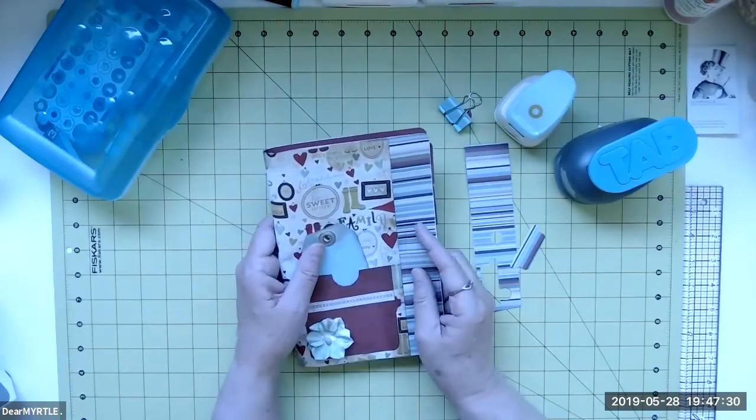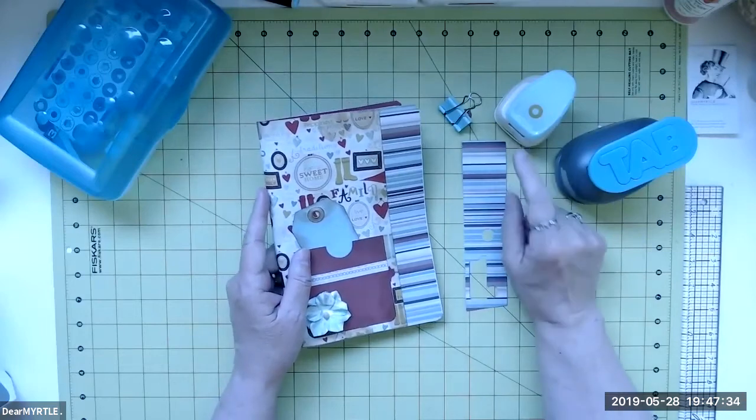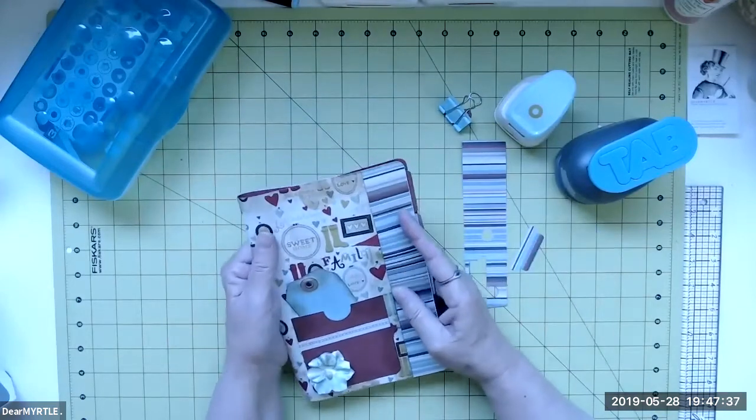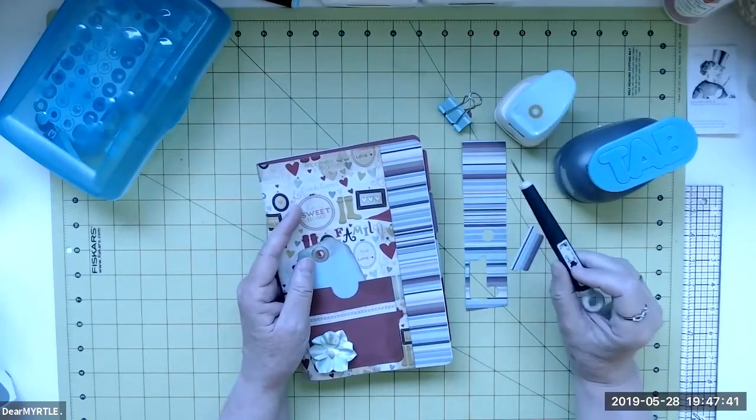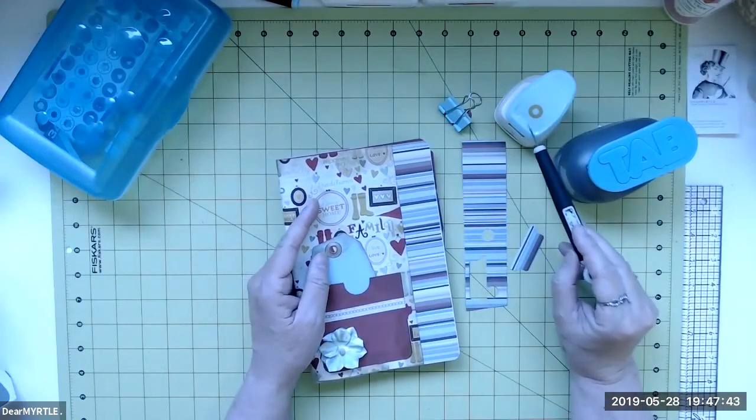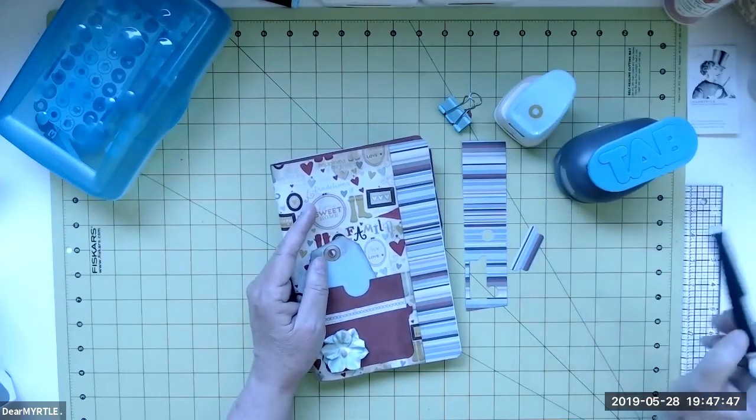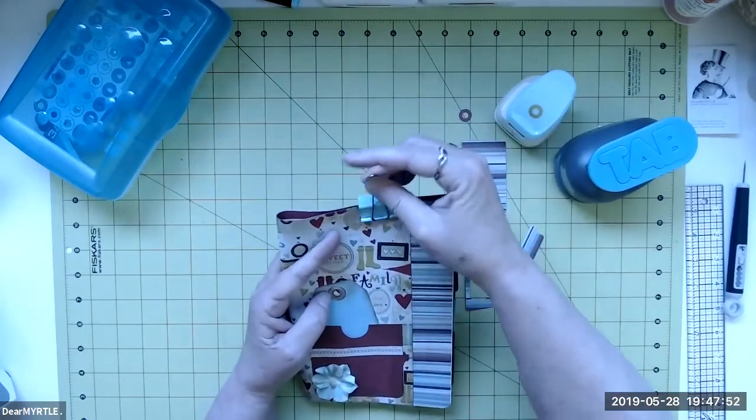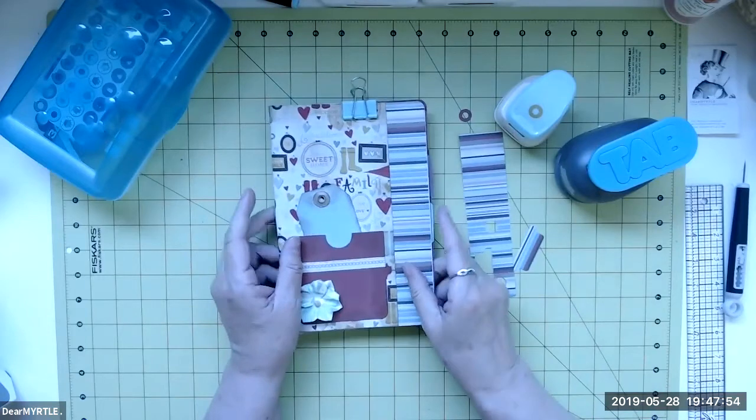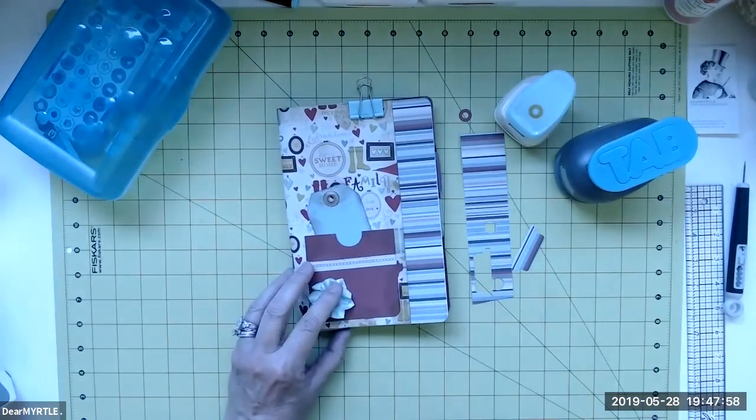So anyway that's what we can accomplish with these two new punches that I got. There was a Memorial Day sale. All of these were 40% off over at Hobby Lobby so I was really happy. I've been wanting both of them but as I said I only buy things when they're on sale. Temporarily I'm using this little clip to hold this together until I finish this project. I'm always working on different projects.